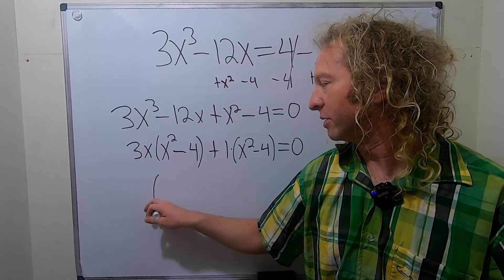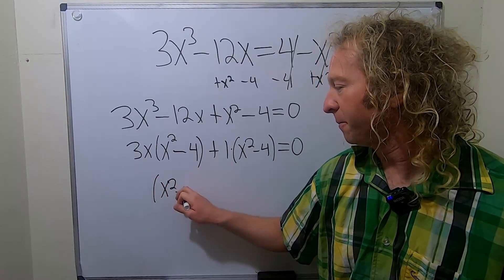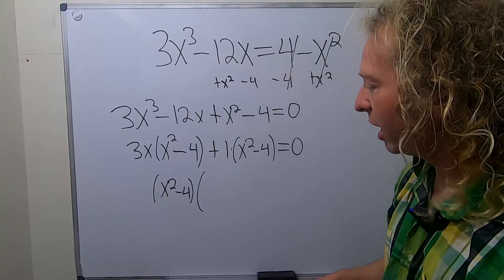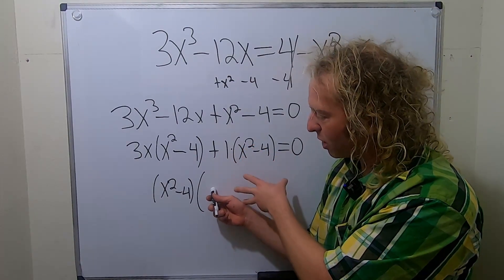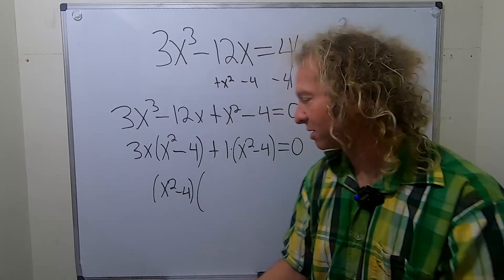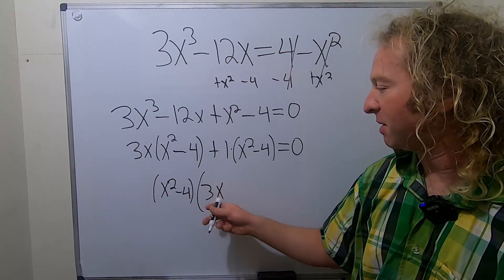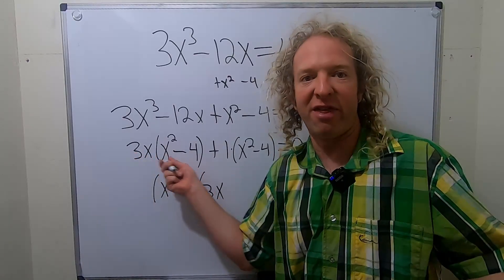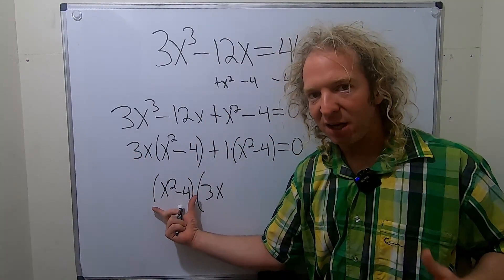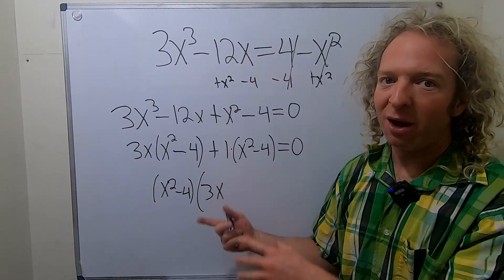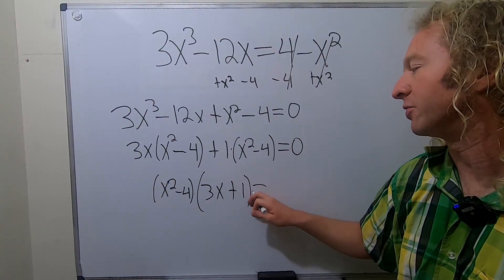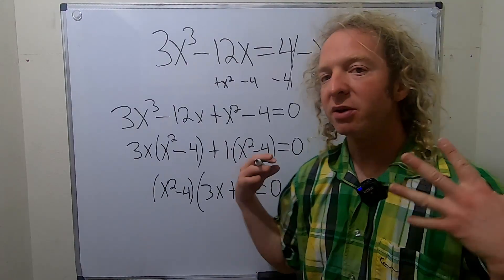So you can write it like this, x squared minus 4, parentheses. And then you ask yourself, okay, what goes here? What do you have to multiply this by in order to get this? Well, you're missing 3x. So 3x, because 3x times this is that. Then you say, what do you have to multiply by this in order to get this? Well, you're missing the 1. So just plus 1. Beautiful stuff. This problem has worked out so nice.